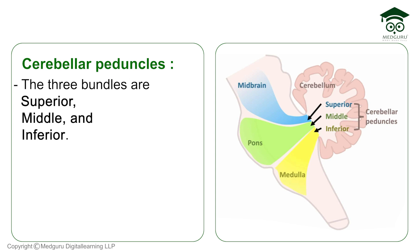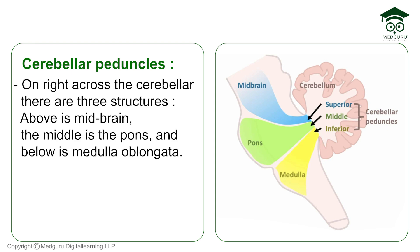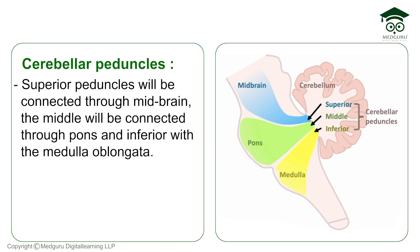There are three cerebellar peduncles: the superior, the middle, and the inferior. There are three brainstem structures they connect to — the upper is midbrain, the middle is pons, and the lower is medulla oblongata. The superior cerebellar peduncle connects to the midbrain, the middle cerebellar peduncle connects to the pons, and the inferior cerebellar peduncle connects to the medulla oblongata.